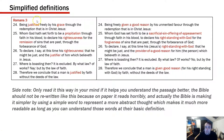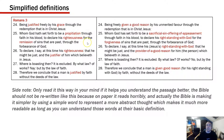In Romans 3, 'being justified freely by his grace' means being freely given a good reason by God's unmerited favor, through the redemption in Christ Jesus, whom God set forth as a propitiation — a sacrificial sin offering of appeasement — through faith in his blood, to declare his righteousness for the remission of sins. A man is justified, given good reason for his right standing with God, by faith. These are simple words — they're not complicated at all.